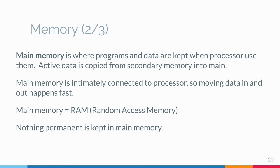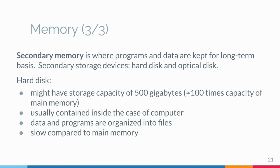Nothing permanent is kept in main memory. Sometimes data are placed in main memory for just a few seconds, only as long as they are needed. Secondary memory is where programs and data are kept on a long-term basis. Common secondary storage devices are the hard disk and optical disk. The hard disk has enormous storage capacity compared to main memory and is usually contained inside the case of a computer.